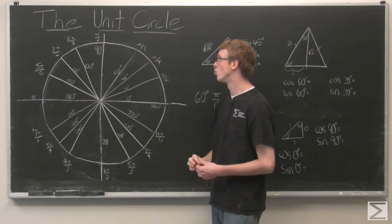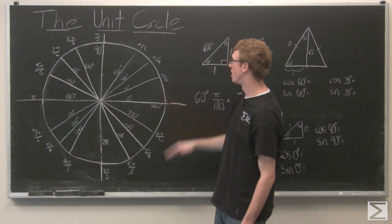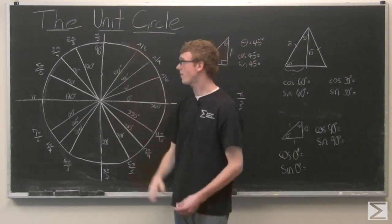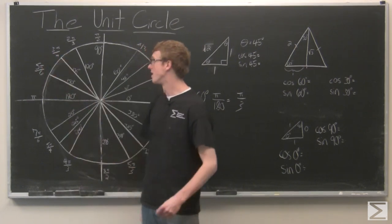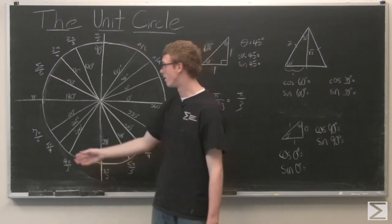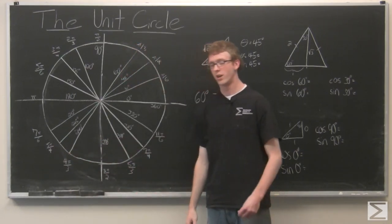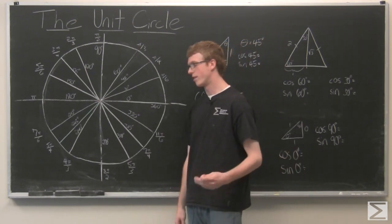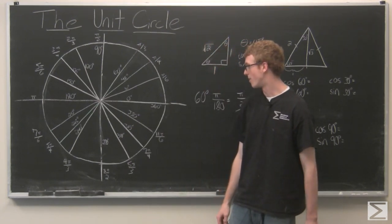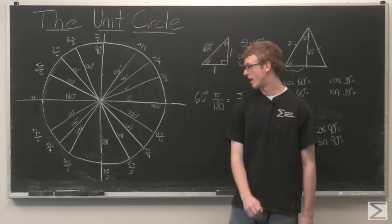We want to pay attention to what they look like. Notice in the first quadrant, all the numerators are 1. In the second quadrant, all the numerators are 1 less than the denominator. In the third quadrant, all the numerators are 1 more than the denominator. And in the fourth quadrant, all the numerators are 1 less than twice the denominator. So that's just a good way to remember the values.